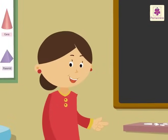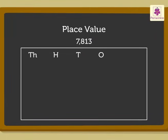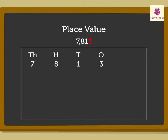Let us take the number 7813. We write the number 7813 in the place value chart as: digit 7 in the thousands column, digit 8 in the hundreds column, digit 1 in the tens column, digit 3 in the ones column.